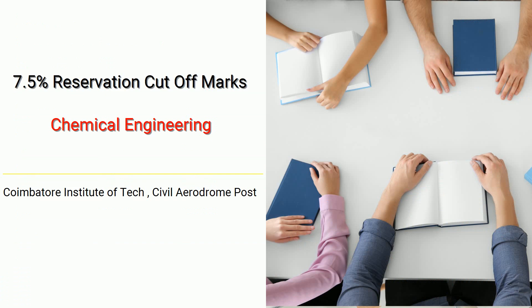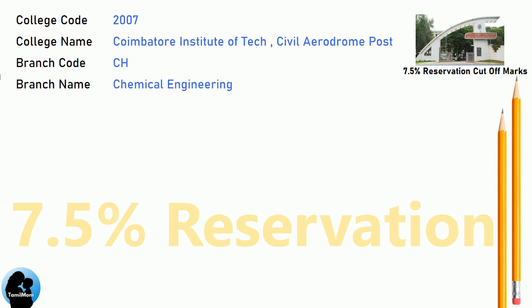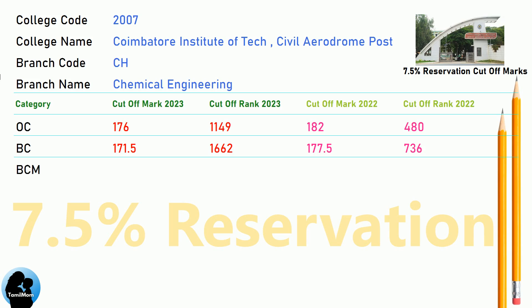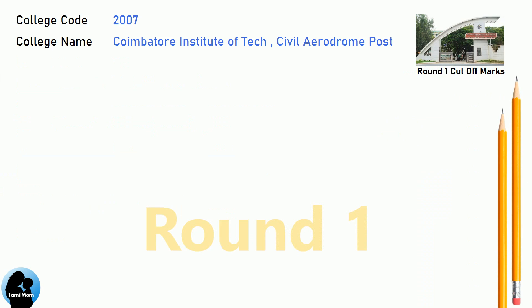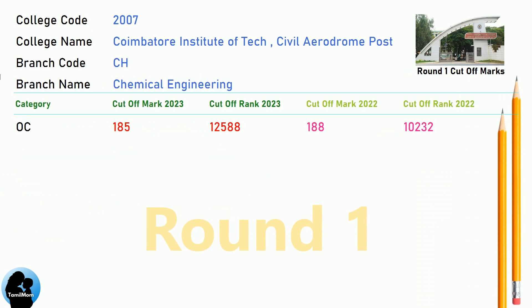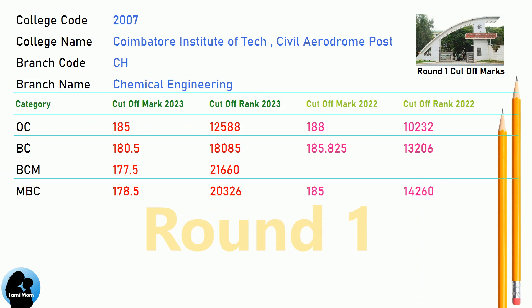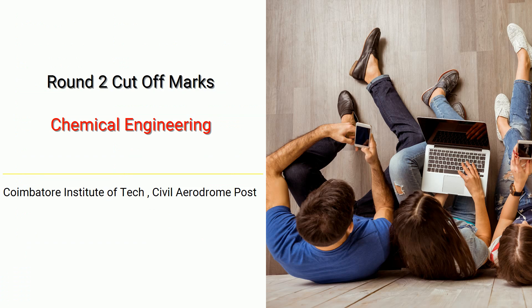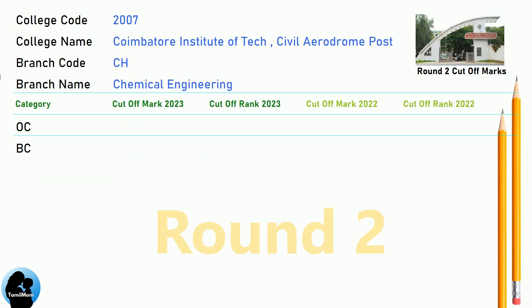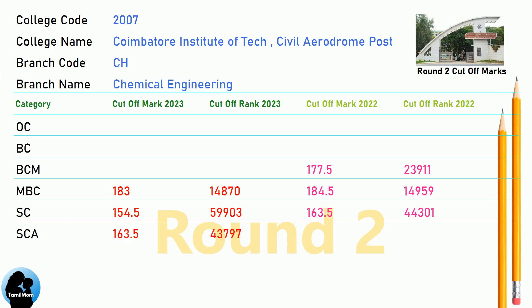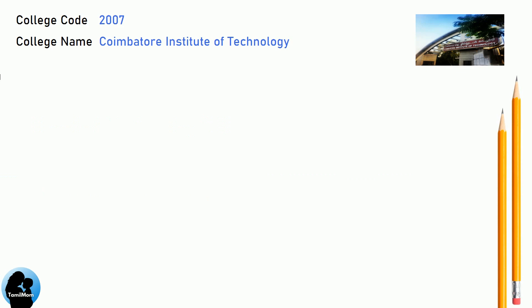DNA 7.5 Reservation Cut-Off for Coimbatore Institute of Technology in Chemical Engineering. DNEA Round 1 Cut-Off for Coimbatore Institute of Technology in Chemical Engineering. DNEA Round 2 Cut-Off for Coimbatore Institute of Technology in Chemical Engineering. DNEA Cut-Off for Coimbatore Institute of Technology in Chemical Engineering.